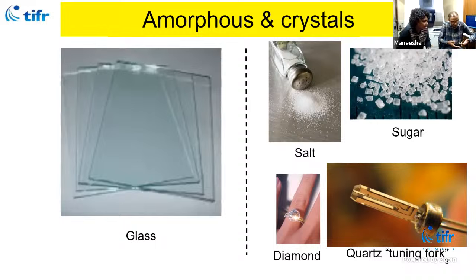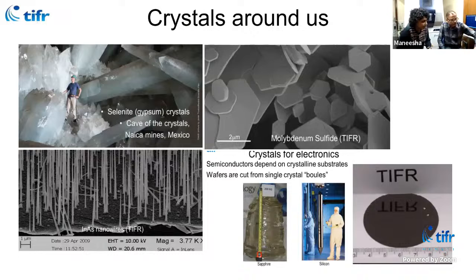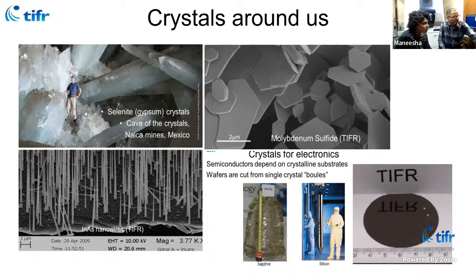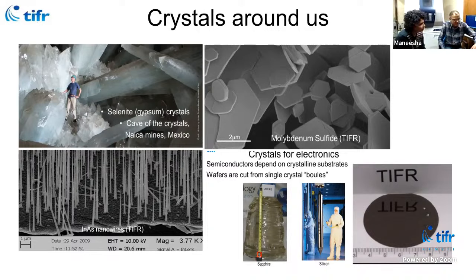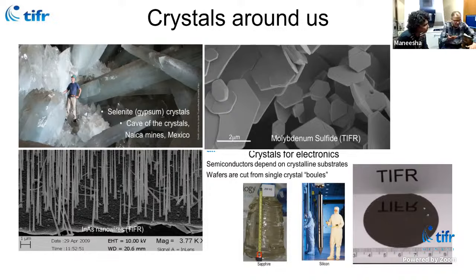Crystalline material includes salt, sugar, and diamond. Most materials we see around us are in crystalline form. The quartz crystal in a digital clock is a good example. Crystals can range from very large — like gypsum crystals several meters in size — to very small, like nanowires of a few nanometers. In the electronics industry, silicon or sapphire crystals of a few meters in length, weighing around 240 kg, are grown and cut into wafers.